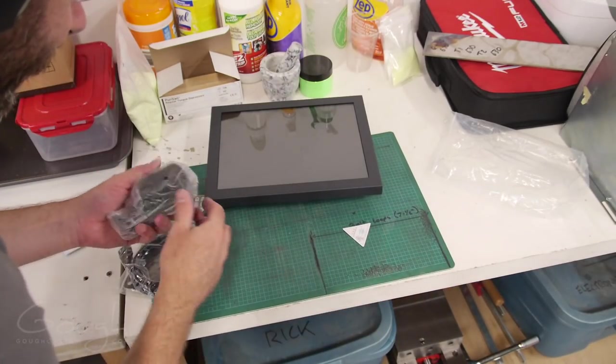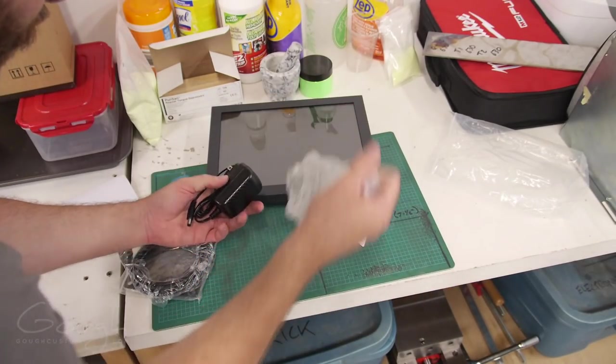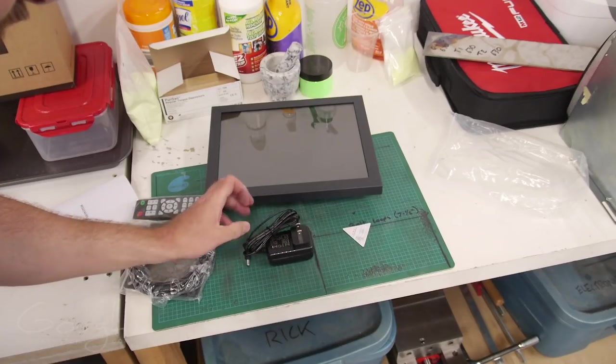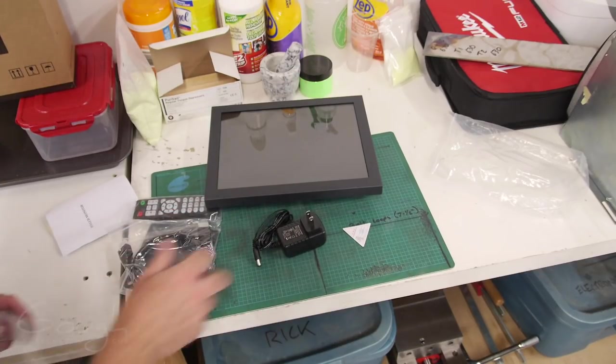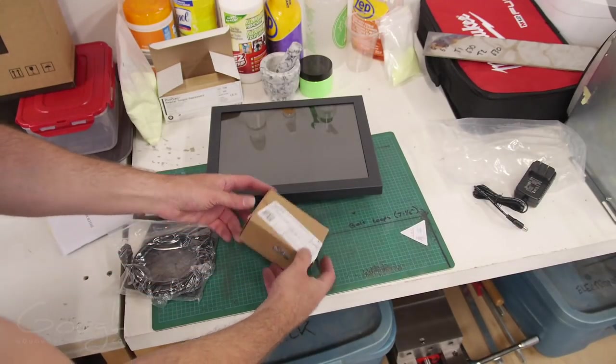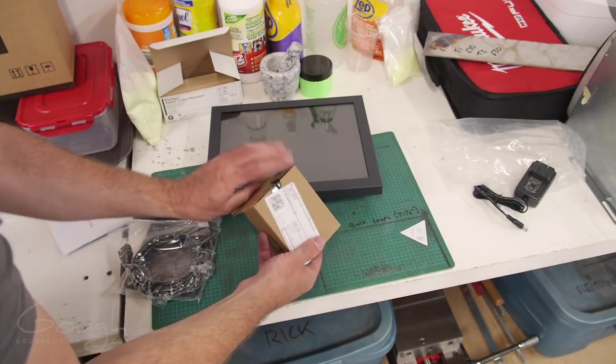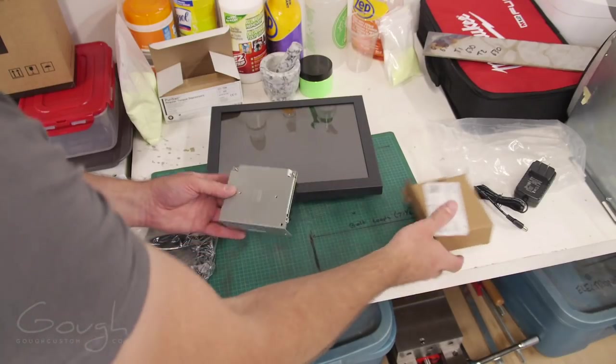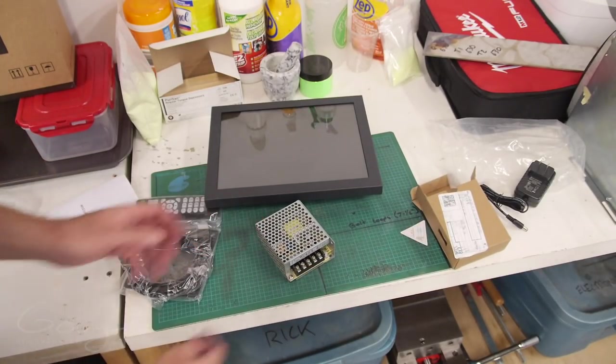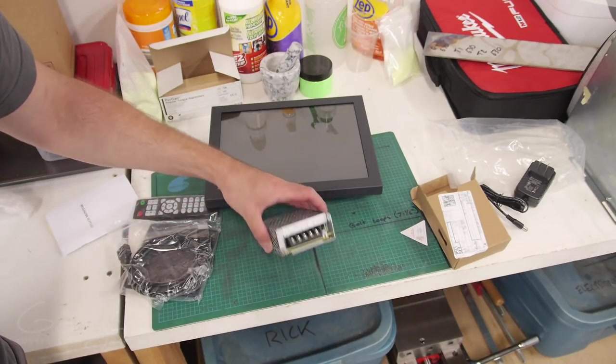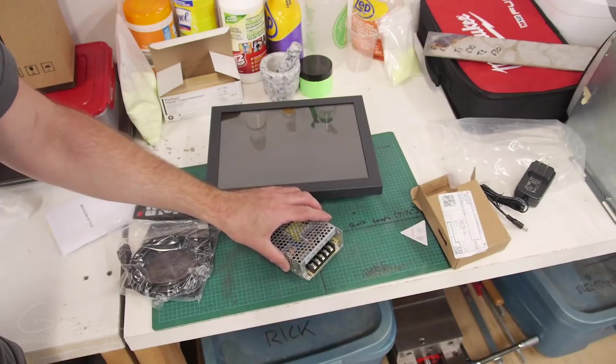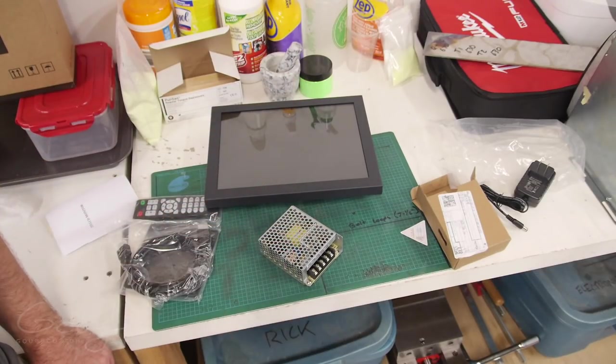For power, it comes with this little wall wart power supply. We're not going to use this because it would be very awkward to safely fit this into the machine. So instead I bought this little guy off Digikey. This is a 36 watt Meanwell 12 volt power supply. It's a nice little switch mode power supply and we'll actually be able to mount this on the back of the monitor on the VESA mount.